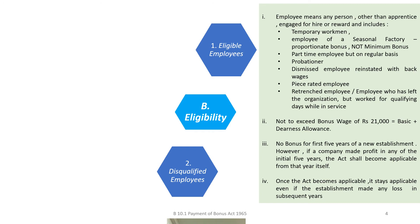The definition of employee is covered by the scheme. It excludes apprentices but is generous enough to include all other denominations such as temporary employees, probationers, dismissed employees, and resigned employees, subject to meeting the wage ceiling and the minimum service requirement during the accounting year. The first five years of a company are exempt from bonus payment, but if in any of the five years a profit is reported, bonus becomes compulsory from that year itself.